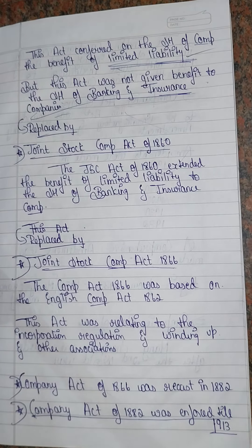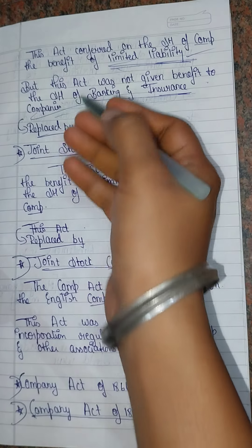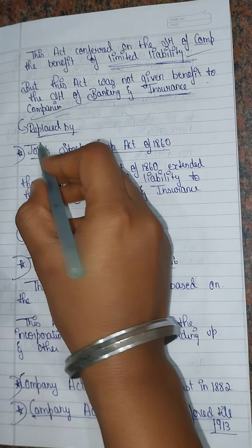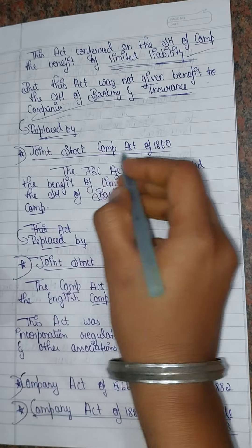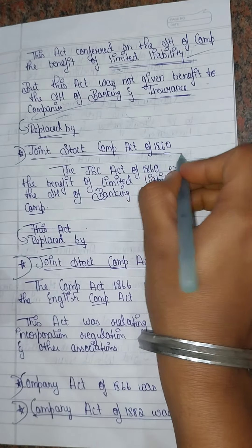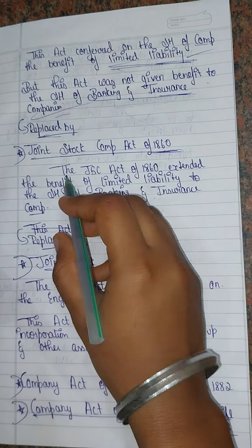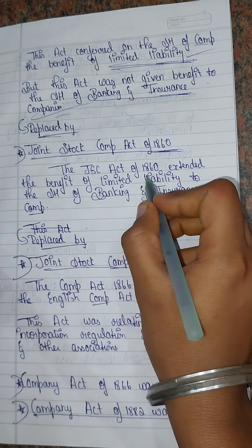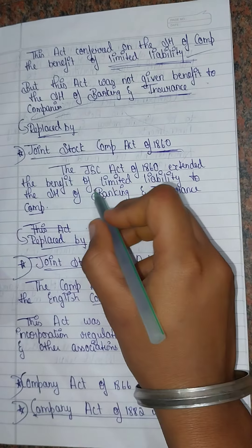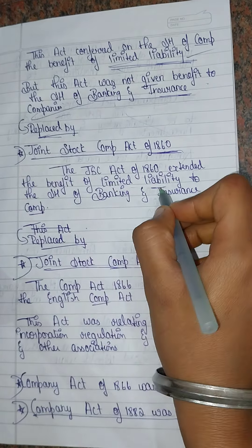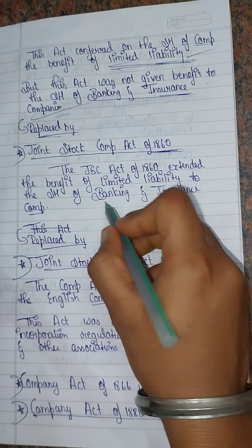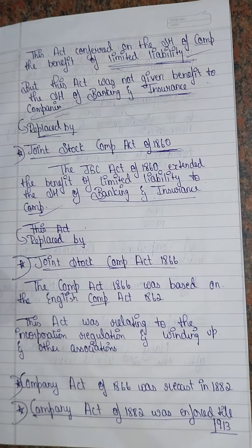The Joint Stock Companies Act 1857 was replaced by the Joint Stock Companies Act 1860. The 1860 Act extended the benefit of limited liability to the shareholders of banking and insurance companies as well.